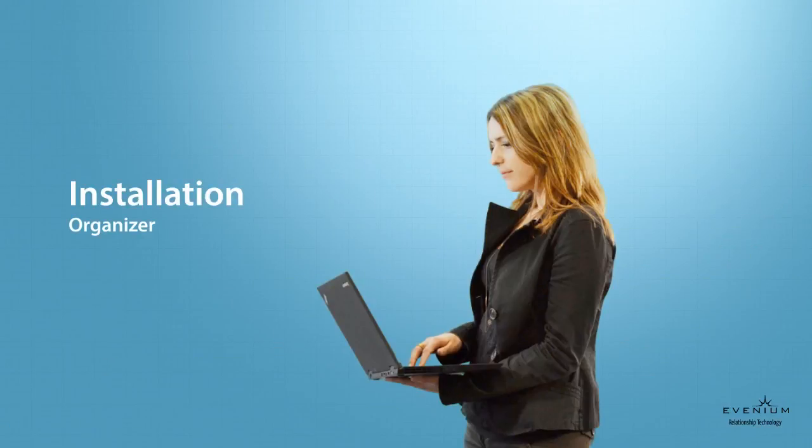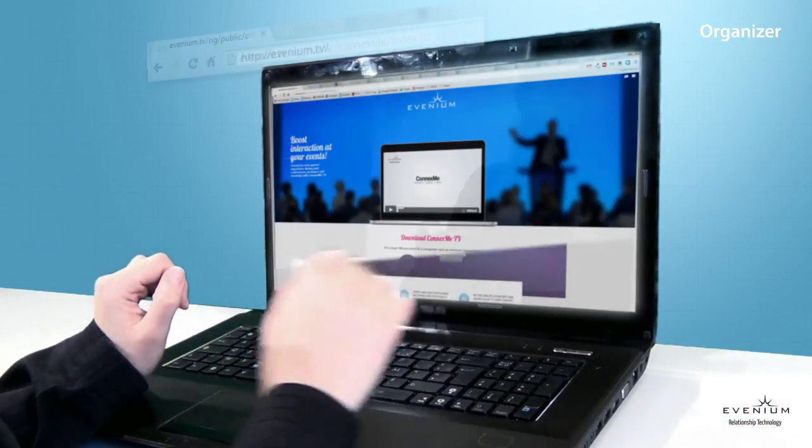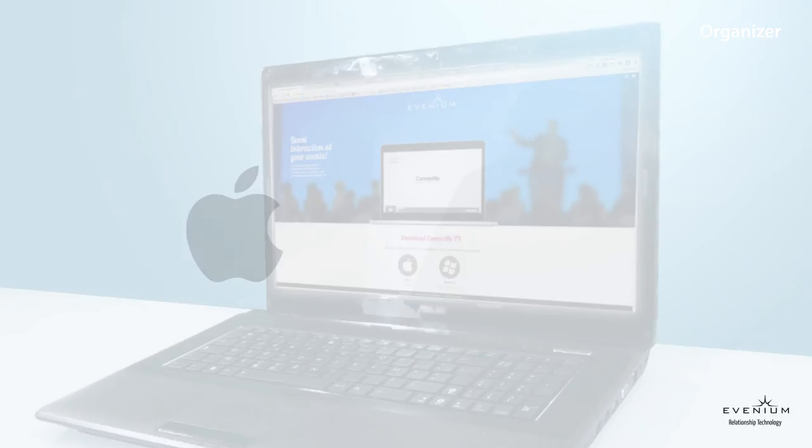The first thing you have to do then is to download Avenium ConnectMe TV by going to www.avenium.tv. You can then choose either the Mac or PC version.